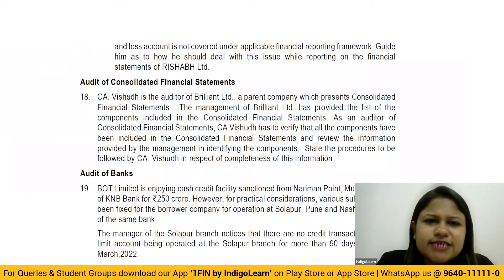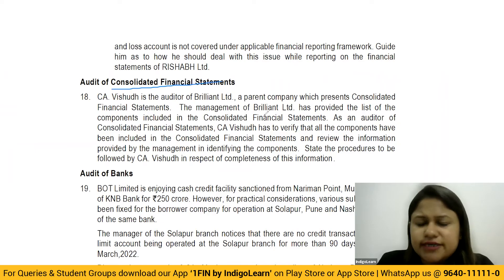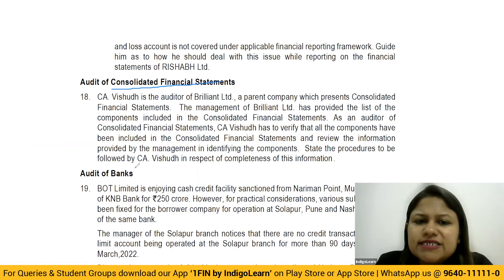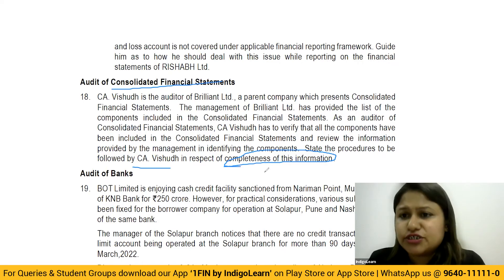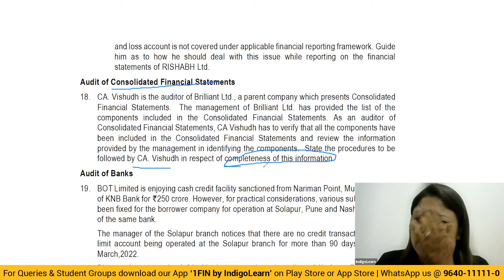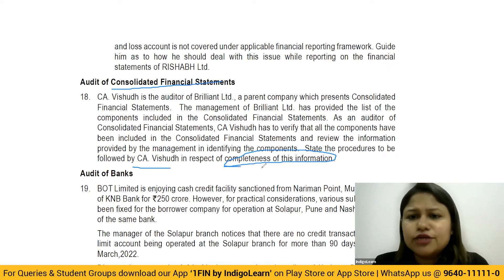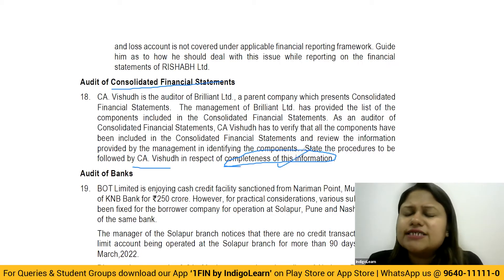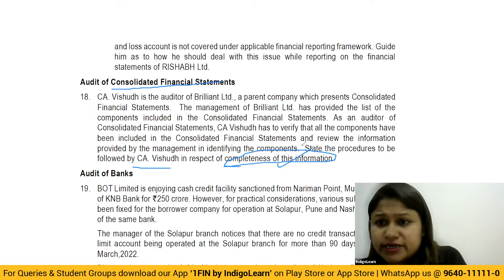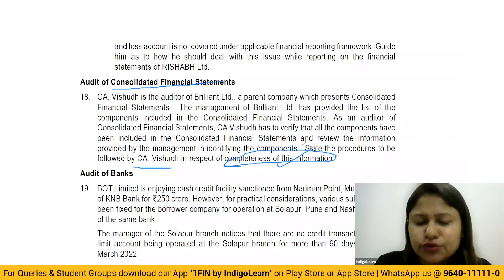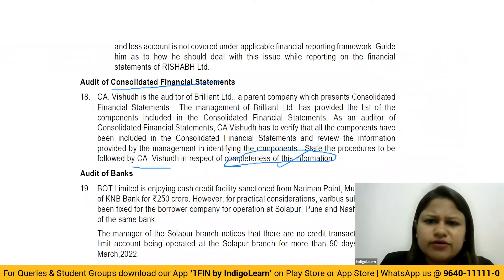Next: Audit of consolidated financial statements. The question asks about the procedure to be followed for ensuring completeness of information in the CFS audit. This is straightforward — when conducting a CFS audit, you review previous working papers, obtain a management-provided list of components, take confirmations and ensure no component is omitted from the consolidation. The question requires explaining how to verify that all components have been included in the CFS and that the data is complete.